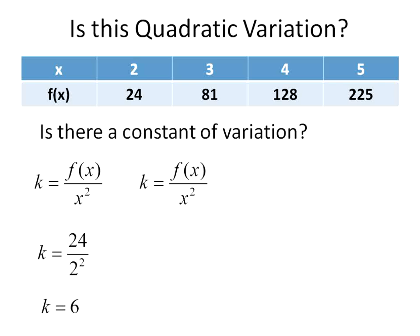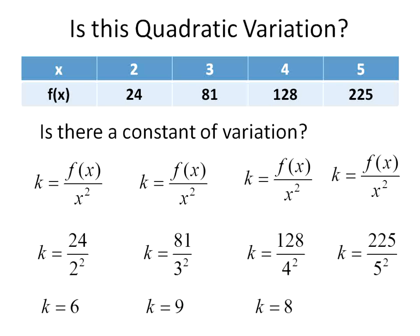Let's move on to our second set of numbers. We're going to use exactly the same equation. A function at x, which is 81, divided by 3 squared. 3 squared is 9. 81 divided by 9 is 9. So our constant for the second one is different. So we know these two are not quadratic variations. Let's continue on. Our function at x over x squared. 128 over 4 squared. 128 divided by 16 is equal to 8. So again, we have a different value there for our constant. Three different numbers, so this is not a quadratic variation. We could tell you that right now, having done the first three. We're going to do the fourth one as well. 225 divided by 25 is 9.